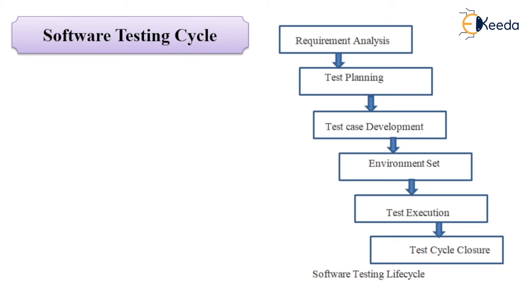Then you have test execution. This is where we start executing the documents prepared during test planning. The activities are: execution of test cases, reporting of test results, logging of defects — wherever test cases fail, you log the defects in a log book recording what kind of defects, who found them, when, and where — and closure of defects, documenting who closed it, what was built, and how. The outcomes are the test execution report, updated test cases with results, and a bug report.